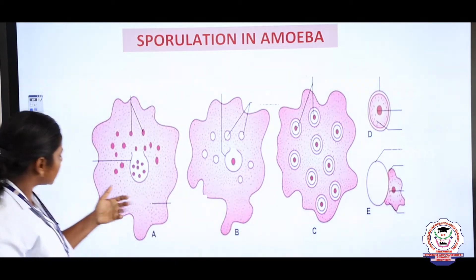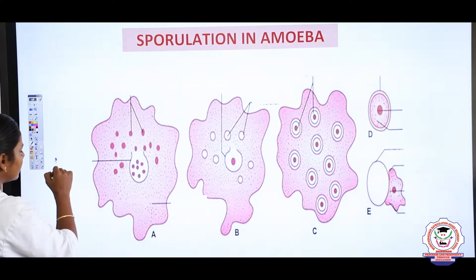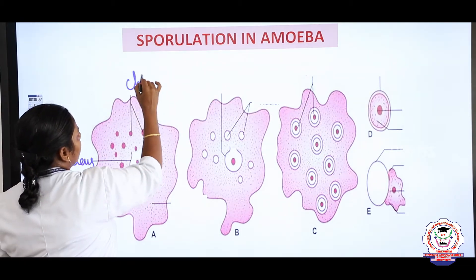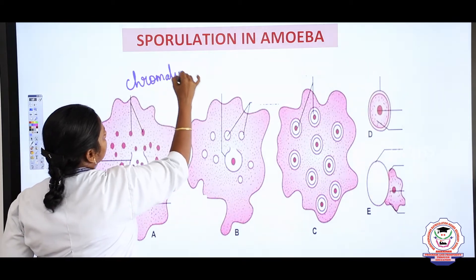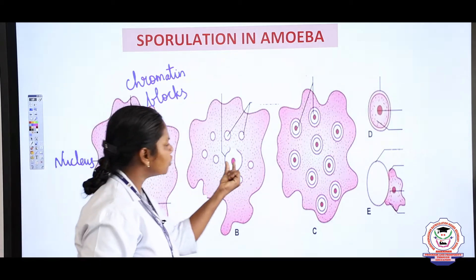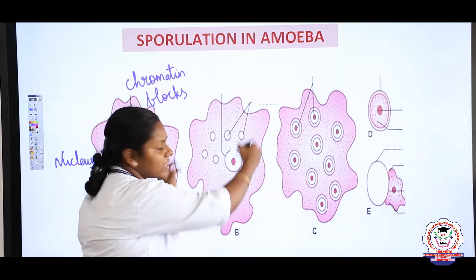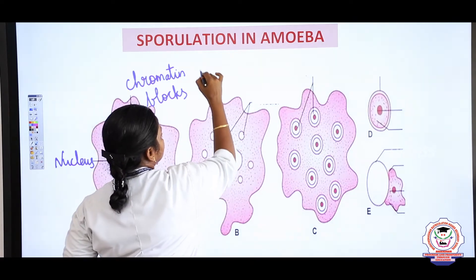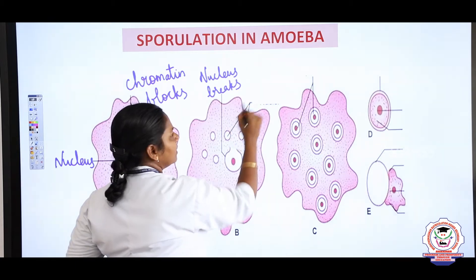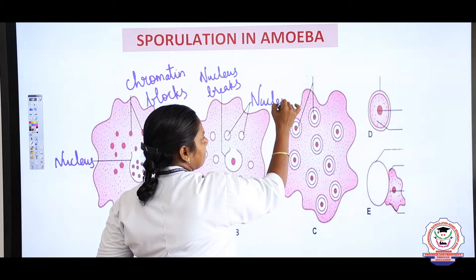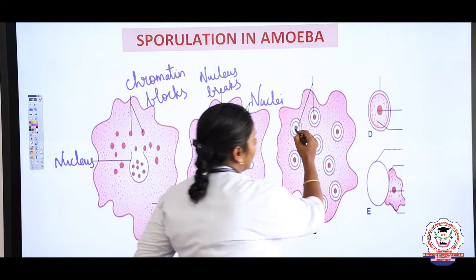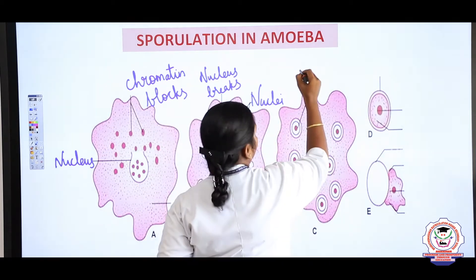Look at this picture. This is amoeba, and this is the nucleus. These are the chromatin blocks — that is the genetic material. The nucleus breaks and starts to grow, forming nuclei. Later, the cytoplasm surrounds each nucleus, and at this stage we call these spores.